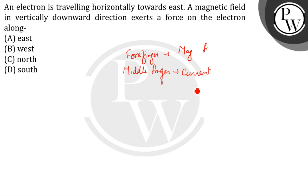Because an electron is traveling in the east, that means the current is traveling to the west. So this is where the current is traveling, and the magnetic field is pointing downwards.